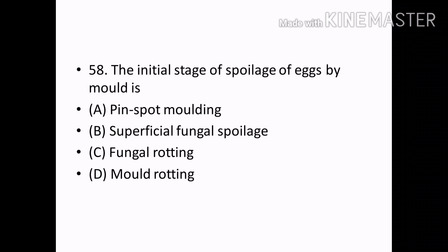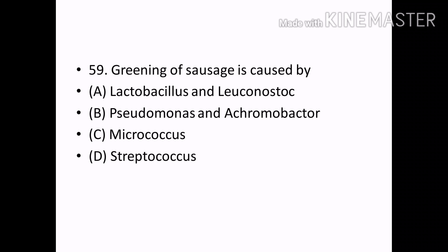The initial stage of spoilage of eggs by molds: Options — Pinspot molding, Superficial fungal spoilage. Correct answer: Pinspot molding. (Also noted: Lactobacillus and Leuconostoc.)